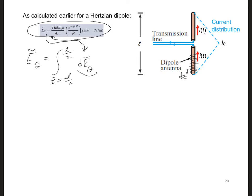What needs to change is the following. First, we need to replace I_0, the amplitude of the current for a Hertzian dipole, with I(z), since we have a triangular current distribution and the current amplitude changes with z. Second, we need to replace L, the length of the Hertzian dipole, with dz.